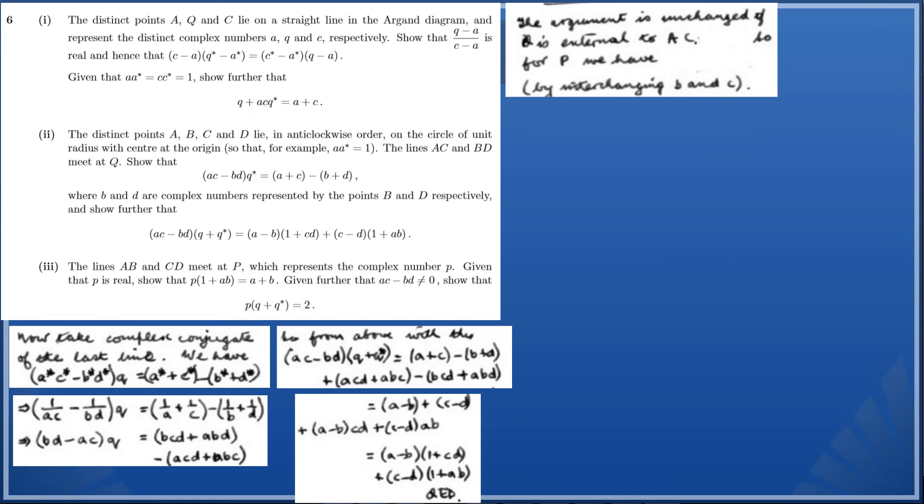Now finally we've got part three. It says the lines AB and CD meet at P, which represents complex number p. Given that p is real, we need to show that p(1+ab) = a+b. Given further that ac-bd ≠ 0, we need to show that p(q+q*) = 2. So let's jump straight in. The argument is unchanged if Q is external to AC. For P, by interchanging B and C, we've got p + abp* = a + b. But we also know that p = p*, so therefore we can replace p* with p and take a factor out: p(1+ab) = a+b.